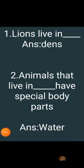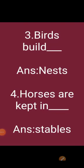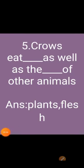Fill in the blanks. First: lion live in — answer is dens. Second: animals that live in blank have special body parts — answer is water. Third: birds build — answer is nests. Fourth: horses are kept in — answer is stables. Fifth: crows eat plants as well as the flesh of other animals.